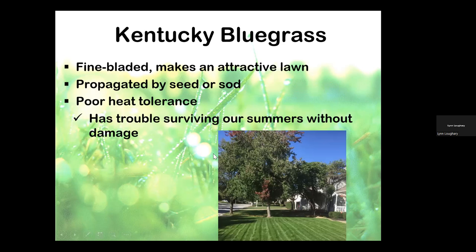Kentucky bluegrass is our other cool season turf. This is the one most people want because it has a beautiful green color — if it's irrigated it can be really dense and beautiful. It's propagated by seed or sod, and it can be sodded without mesh because it has little runners that hold it together. The downside — there is no perfect grass — is heat tolerance. Once we get into the weather we've had the last three weeks, it goes dormant and turns brown, then it'll perk back up.